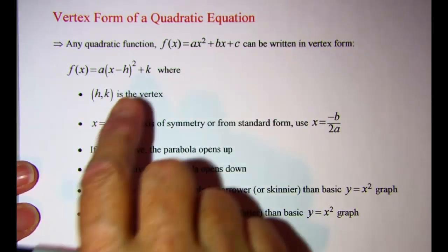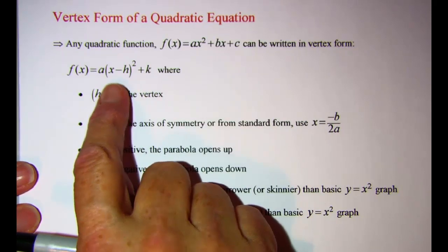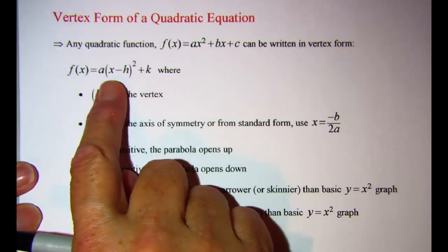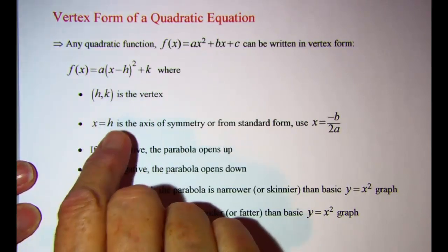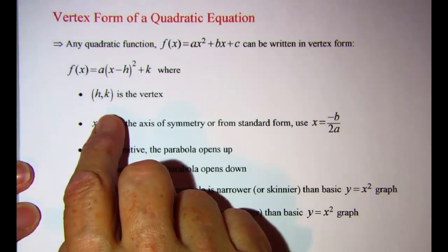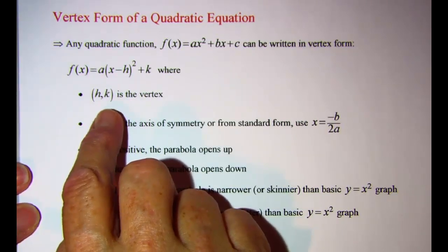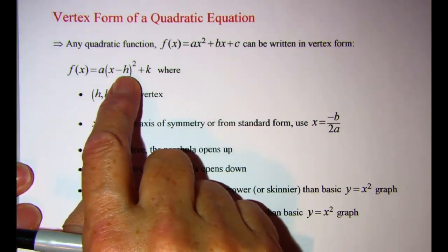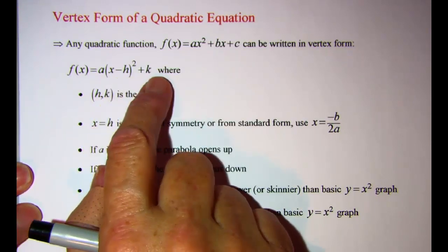When you're given the vertex form of a quadratic equation written in this form, you can get a number of things to help you graph your equation. First of all, the vertex is given by the coordinates (h, k).